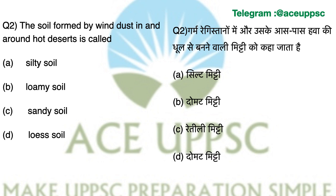Question number 2. The soil formed by wind dust in and around hot deserts is called what? Its answer is Answer D: Loess soil. Loess soil is a pale and loosely packed soil which easily crumbles. Basically, this soil is a sediment which dominates fine sand and clay. It is a wind-blown erosion — when wind dust falls and settles, we call it loess soil.